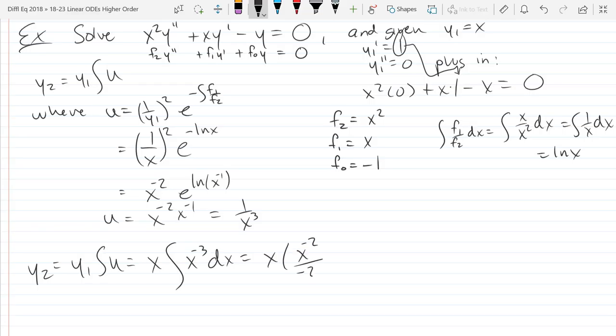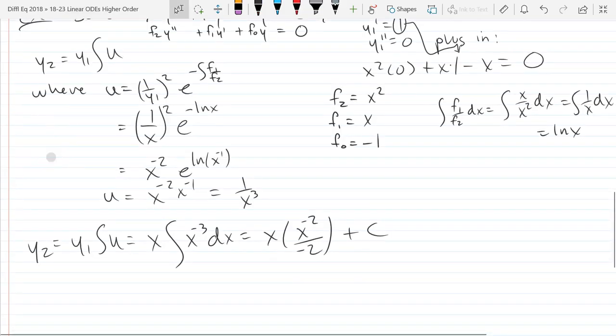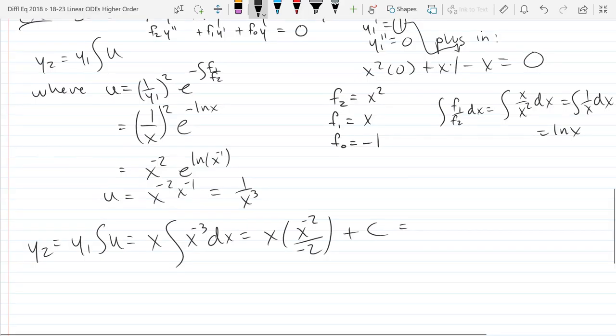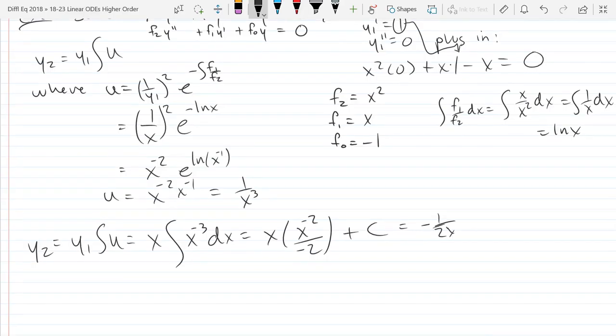So it's x to the negative 2 over negative 2. I think we want to keep our constant here. We have a second degree ODE, so we're going to need two constants unless we've got an initial condition. So that is negative one-half, or negative 1 over 2x. That's y2.